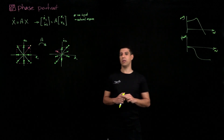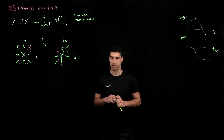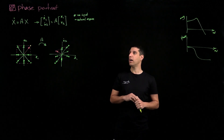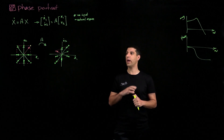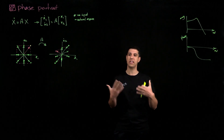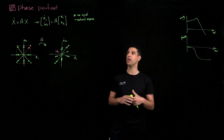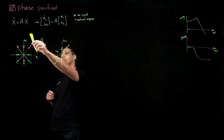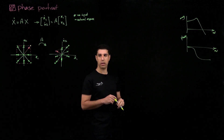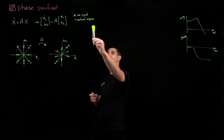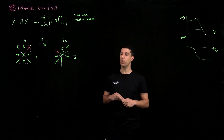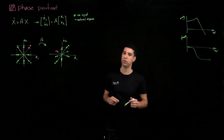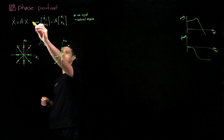We want to do something similar — visualize the response of the system, but in state-space form. The way we'll see this is a way to visualize the entire possible behaviors of the system due to the initial condition. I have a linear system described by x-dot equals Ax, and I'm looking only at the natural response — the response due to initial conditions — with zero input, so there's no plus Bu term.